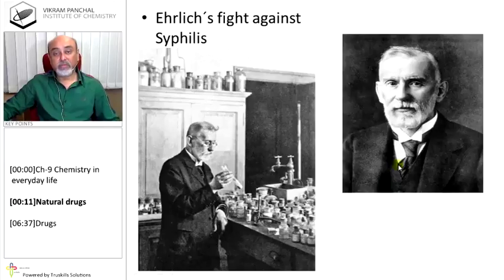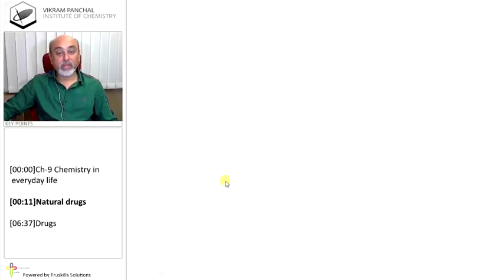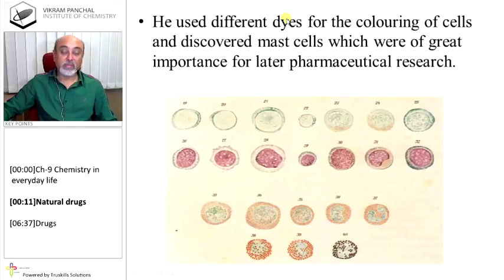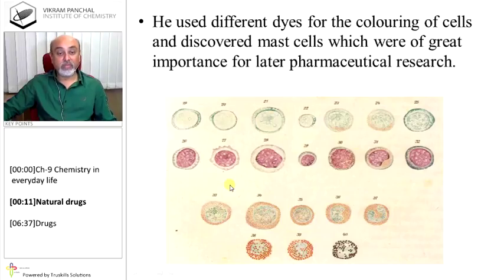How were these chemicals used in the treatment of diseases? Let us start with Ehrlich's work — a German scientist who started working on many diseases with the help of chemicals. He used different dyes for the coloring of cells and discovered mast cells, which were of great importance for later pharmaceutical research. He came to know that it was possible to color many cells of organisms with the help of dyes.